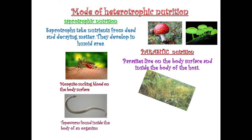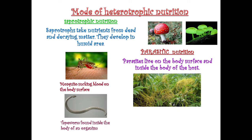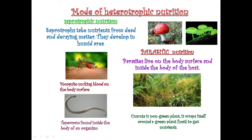There is also a parasite plant called the Cuscuta plant, which is non-green. You can see its yellow portions — it feeds on a green host plant, getting nutrients from it, making it a parasite plant.